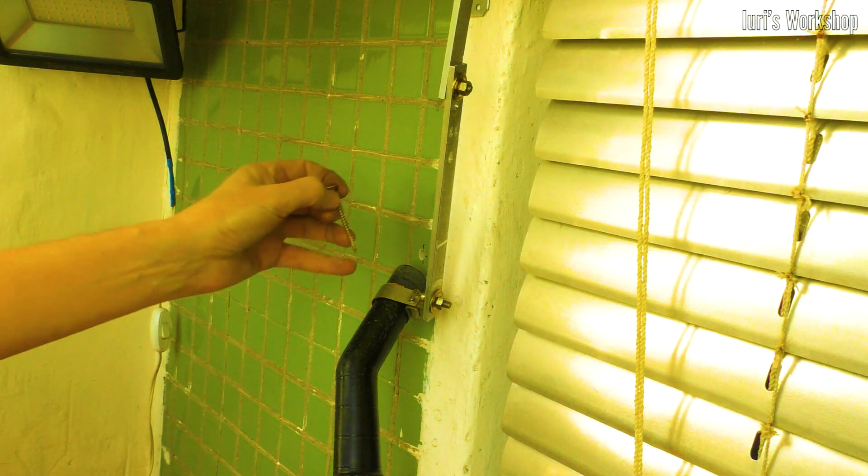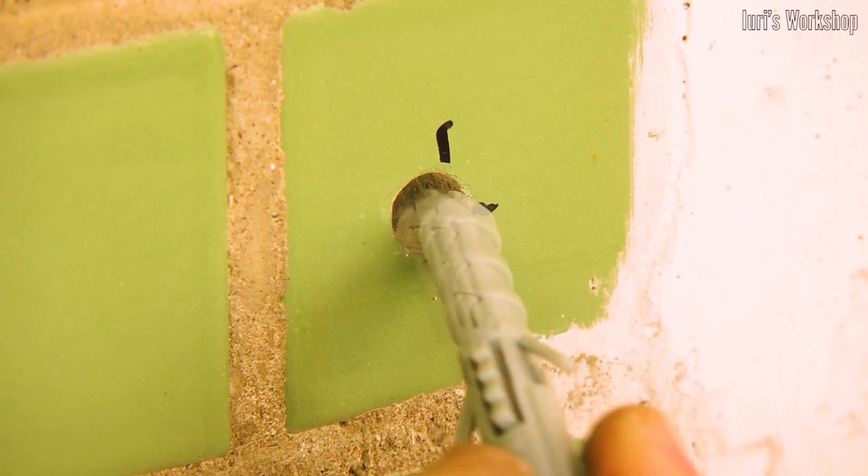If a screw breaks off in a concrete wall, then it can be removed from there without damaging the hole.